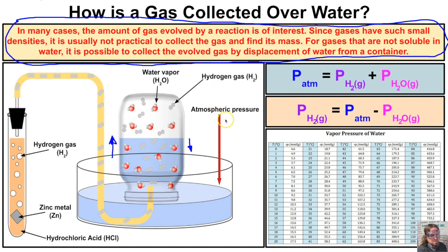The atmospheric pressure is pushing down on the water in the water bath. Meanwhile, the water vapor and hydrogen gas molecules inside the jar are pushing down on the water inside with a certain amount of pressure. We can assume the atmospheric pressure pushing down on the bath equals the total pressure of the water vapor and hydrogen gas pushing down inside the jar.